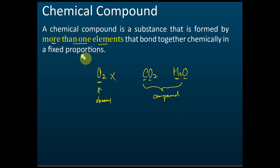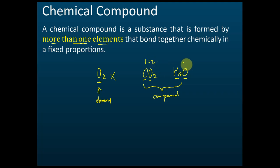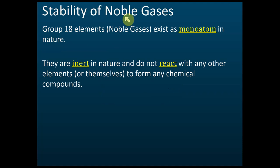The ratio or proportions of the elements in a compound are fixed. For example, carbon dioxide has a carbon-to-oxygen ratio of 1:2. For water, the ratio of hydrogen to oxygen is 2:1. So the ratio is fixed — that is what we mean by fixed proportions.